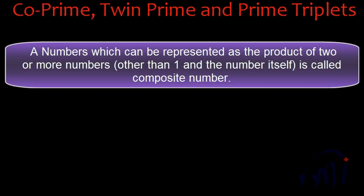And what are composite numbers? Composite numbers are the numbers which can be represented as the product of two or more numbers. That means a composite number will have factors other than 1 and the number itself. So any number which has factors other than 1 and the number itself is called a composite number.